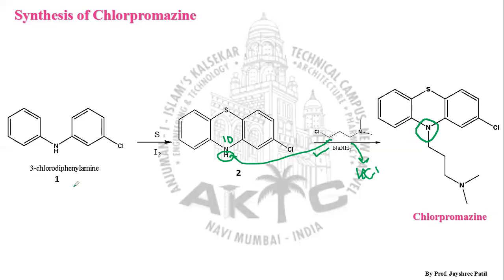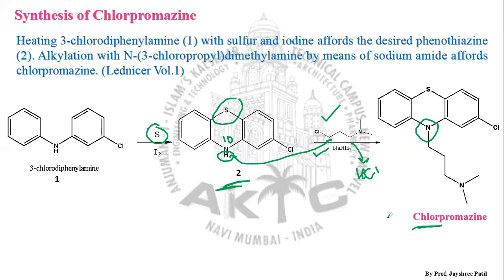To summarize, the synthesis starts from 3-chlorodiphenylamine, which is reacted with sulfur in the presence of iodine to introduce sulfur into the pharmacophore, giving phenothiazine as structure 2. Structure 2 is then acted upon by a base to introduce the side chain at the 10th position on nitrogen, ultimately yielding chlorpromazine, the antipsychotic drug from the phenothiazine category.